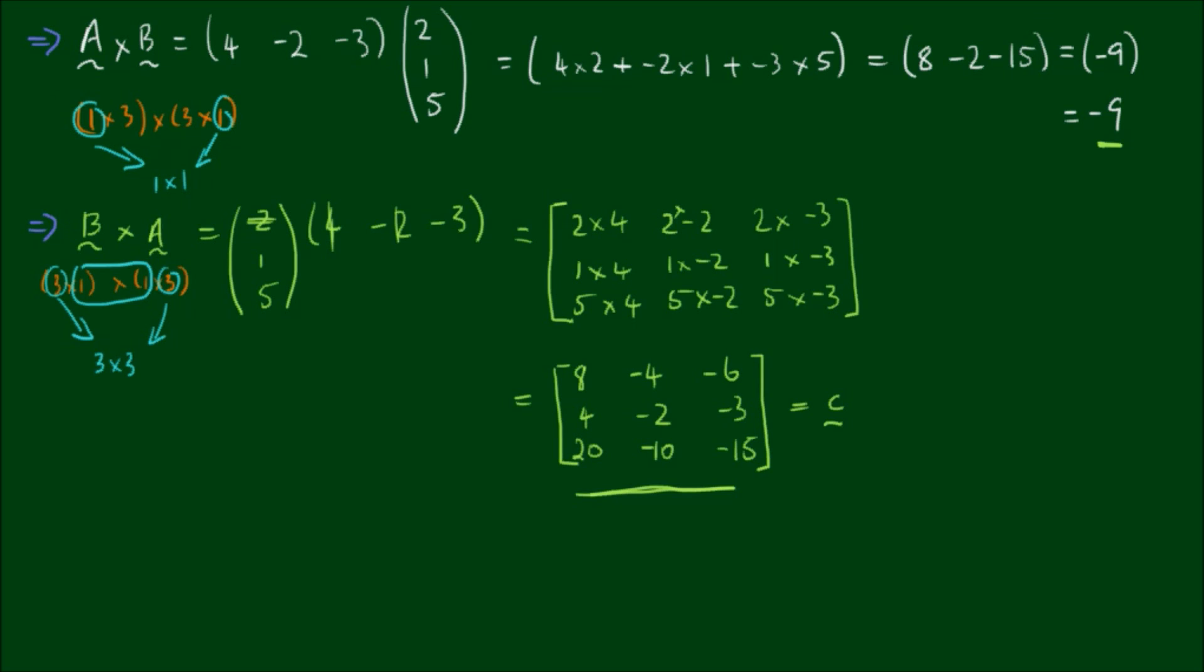Alright, so we've shown here that matrices of different dimensions are clearly not commutative. But what about for square matrices of the same dimension?